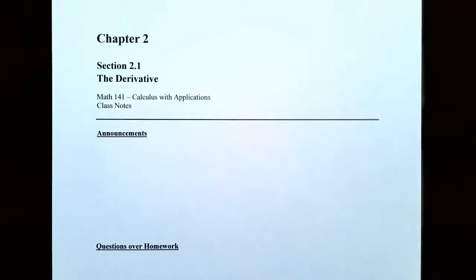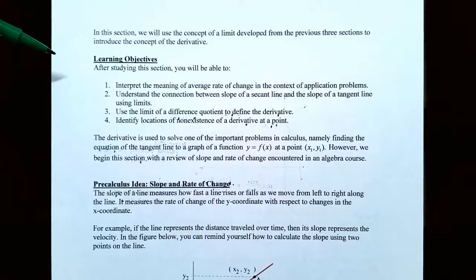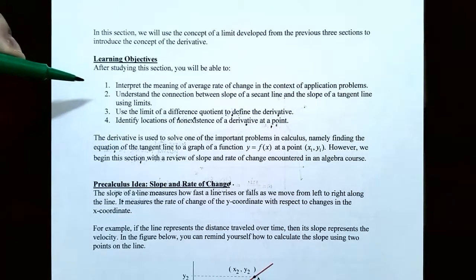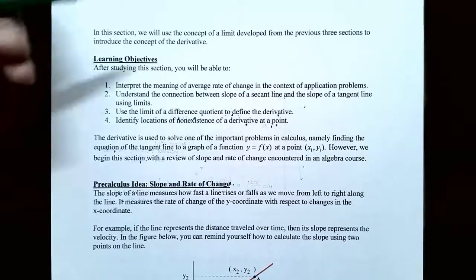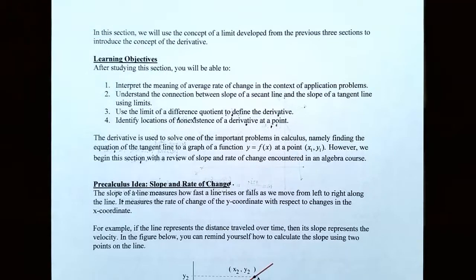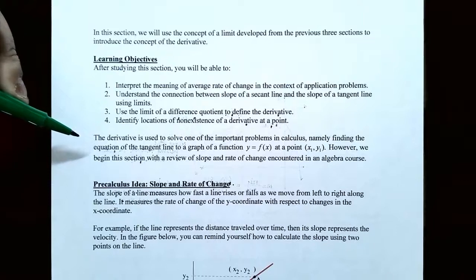Hi everyone, it's Professor Permanent and in this video we're going to start our discussion on average rate of change. We're going to take what we learned in the previous chapter with limits and limit properties to start to introduce the concept of a derivative. We'll talk about interpreting the meaning of average rate of change in application problems and understand the connection between the slope of the secant line and average rate of change using limits. In a previous video we talked about the derivative and how it can be used to solve the tangent line problem.